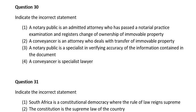Question thirty. Indicate the incorrect statement. Number one, a notary public is an admitted attorney who has passed a notary practice examination and registers change of ownership of immovable properties; number two, a conveyancer is an attorney who deals with transfers of immovable properties; number three, a notary public is a specialist in verifying accuracy of the information contained in the document; number four, a conveyancer is a specialist lawyer. The correct answer is number one: a notary public is an admitted attorney who has passed a notary practice examination and registers change of ownership of immovable property.